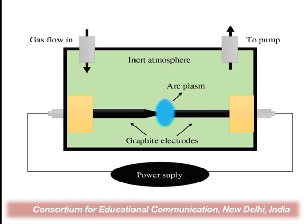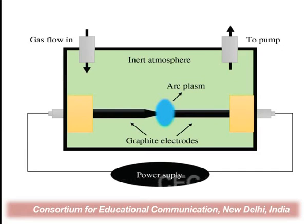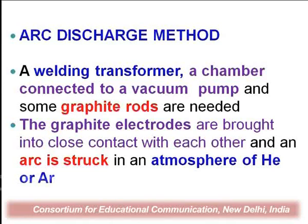The arc is produced by supplying current — one electrode acts as anode and the second as cathode. The heat, plasma, and arc are generated and transferred toward the cathode where vaporization and deposition take place, all done in the helium atmosphere. This method is known as the arc discharge method, where a welding transformer is placed in a chamber connected with a vacuum pump and two graphite rods. These graphite electrodes are brought into close contact with each other until an arc is struck, in an atmosphere of helium or argon.